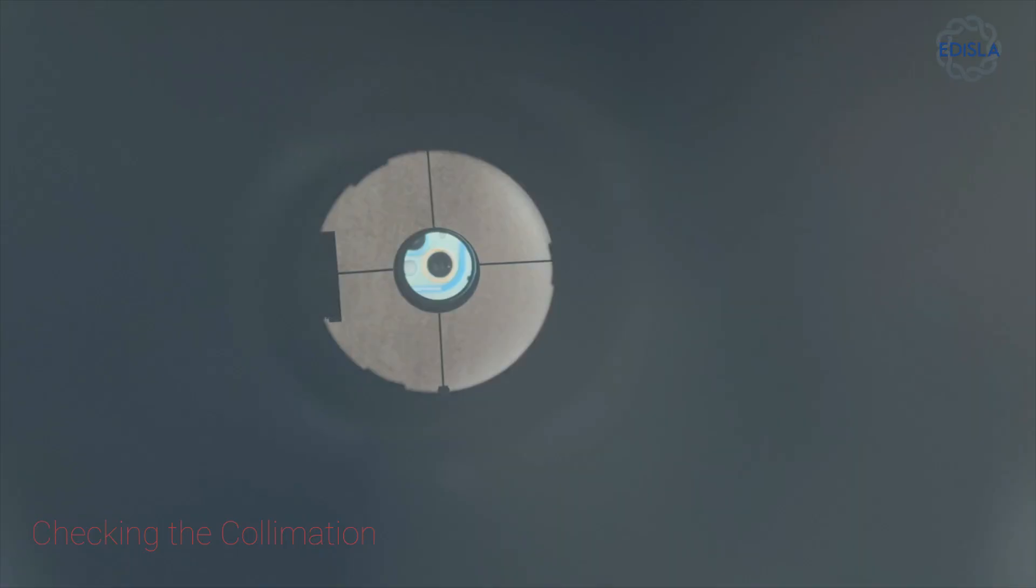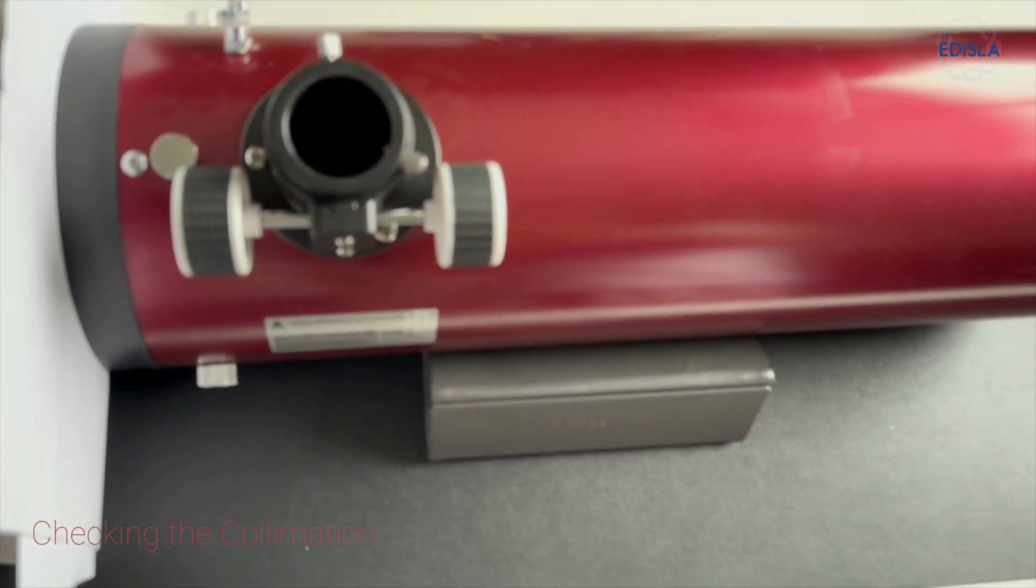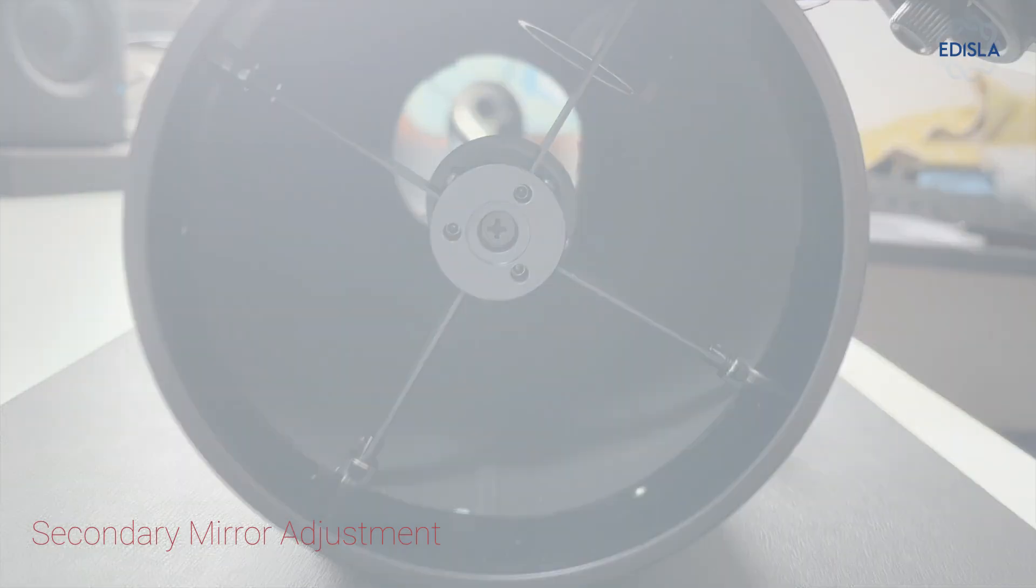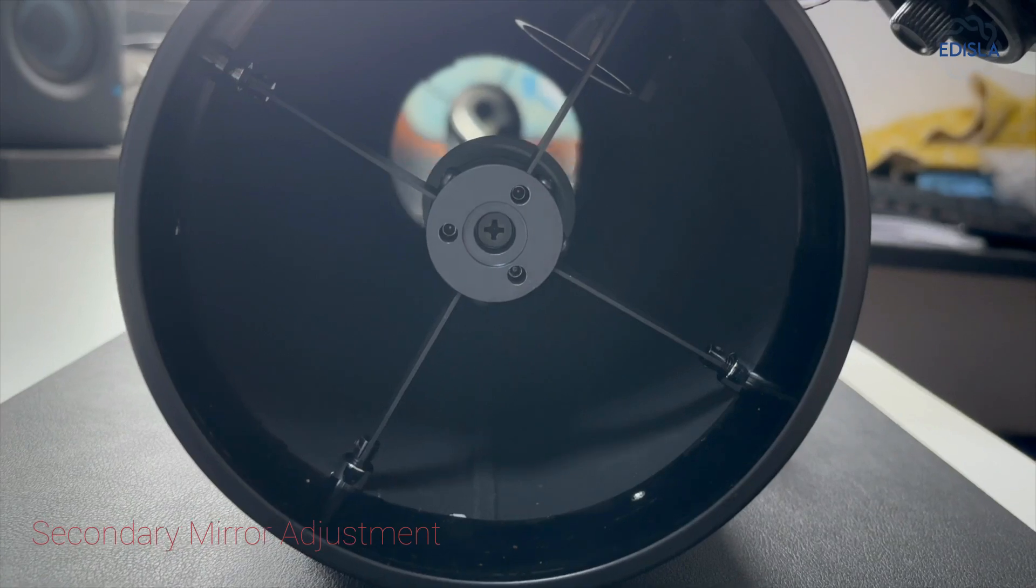Now let's dive into the scenarios where adjustments may be needed. If you observe a partial view, it indicates that the secondary mirror requires adjustment. This common issue is easily fixable.